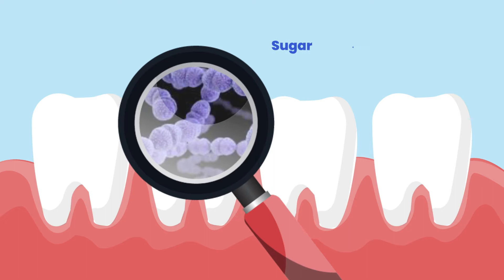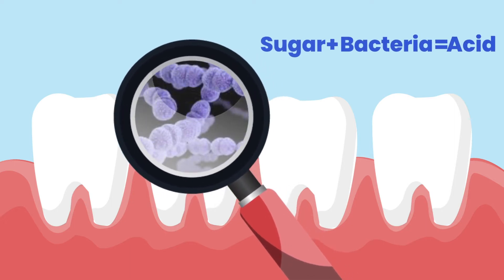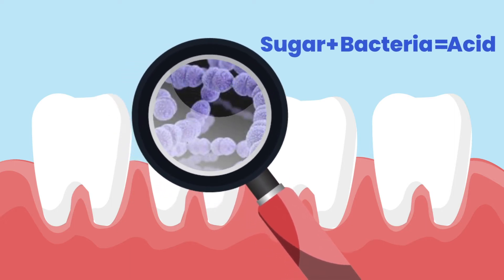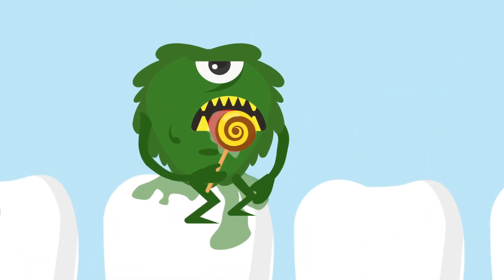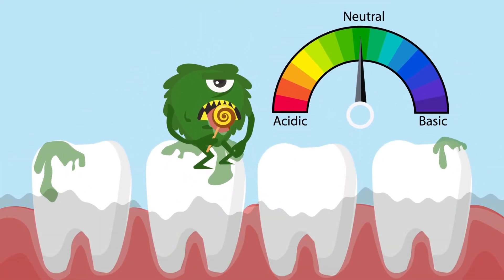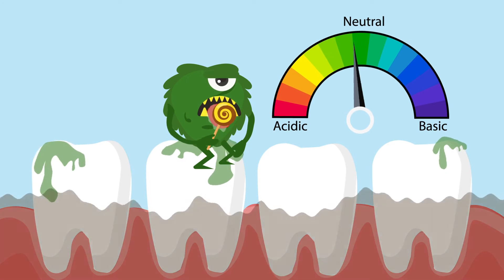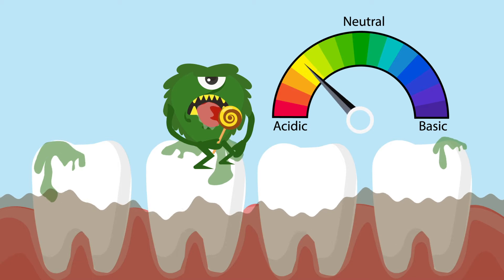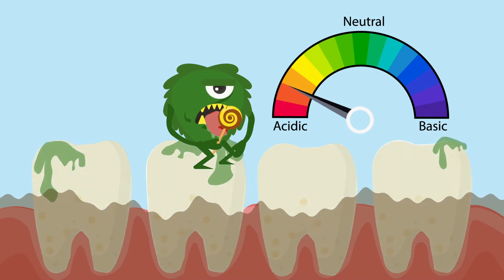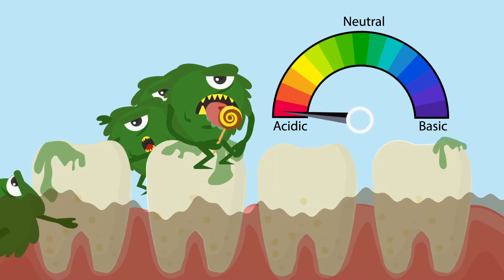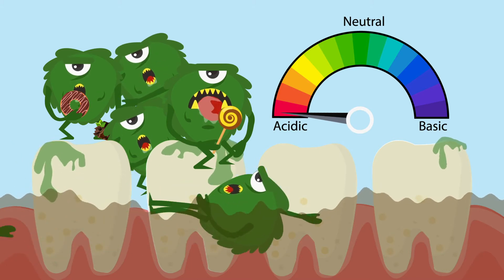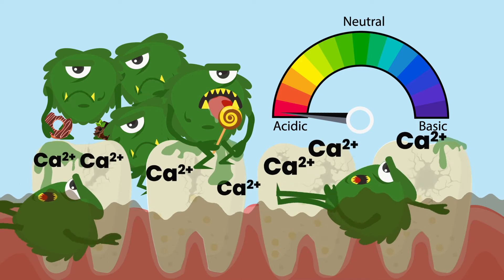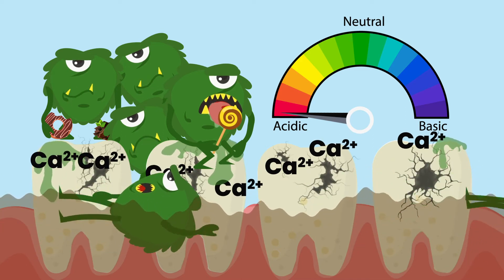Let's look at the relationship. Sugar plus bacteria equals acid. Acid on teeth causes cavities. Not only does Bob create acid when you feed him his favorite foods — after eating, the pH of your saliva drops and becomes acidic for over 20 minutes. If consuming sugar is a frequent habit, fast eaters like Bob multiply rapidly, producing too much acid and taking calcium from your teeth. Bingo — cavities.